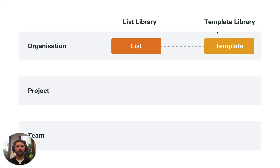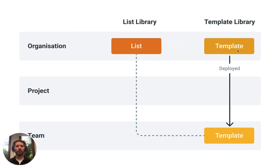When we set up a template at the company level and link it to a list — say we have a site diary and link it to a list of people — when we deploy that template to one of our project teams so it can be used in the field, if it's linked to this list it's going to show all of the values that exist in that list. So if it's a list of people and there are a hundred people, we're going to have a drop-down with up to a hundred people.